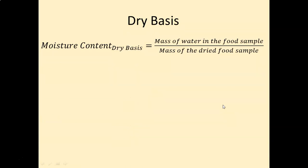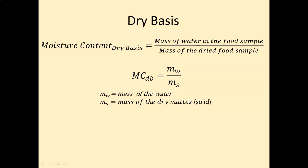Dry basis moisture content is defined as the mass of water in the food sample per unit mass of the dried food sample. The formula is: MCDB = mw / ms, where mw represents the mass of water in the food sample and ms represents the mass of the dried matter or the solid.